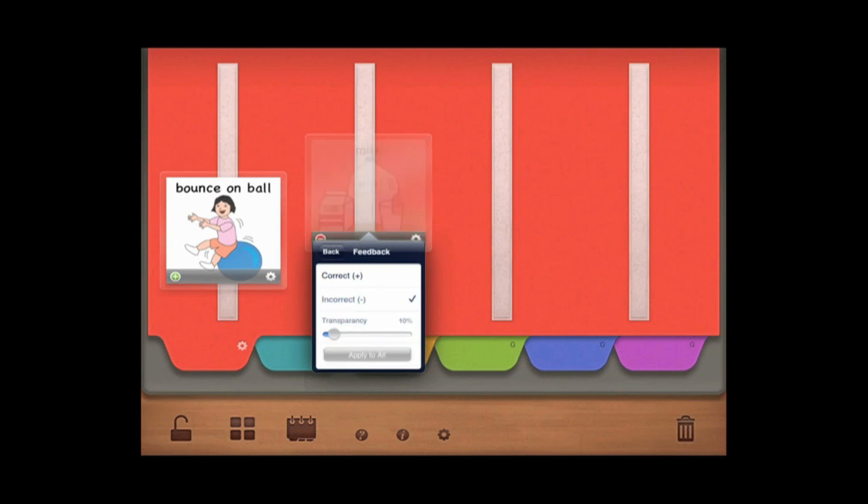For this demonstration, we will start with a Phase 3A Simple Discrimination and use pictures of a preferred and a non-preferred or non-reinforcing item. In the lower left-hand corner of each picture, you can designate the picture as that of a preferred item by selecting the plus or non-preferred by selecting the minus.